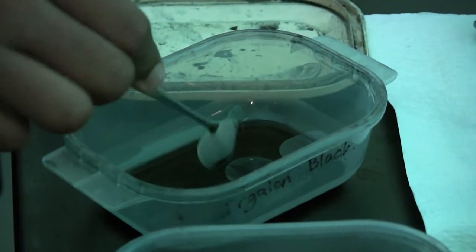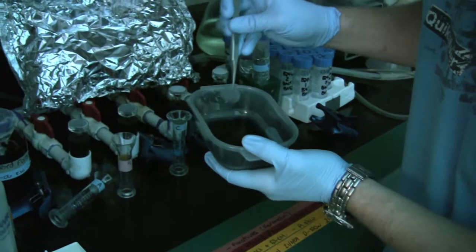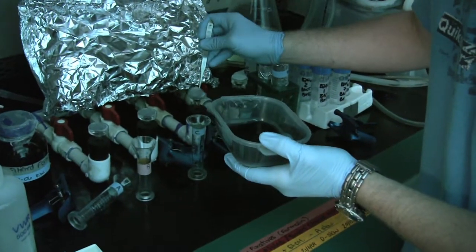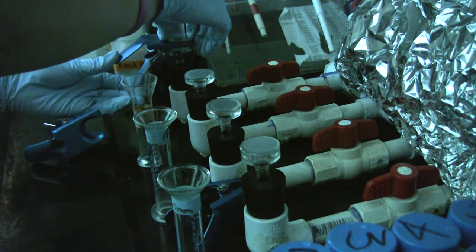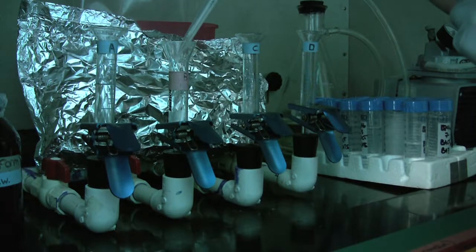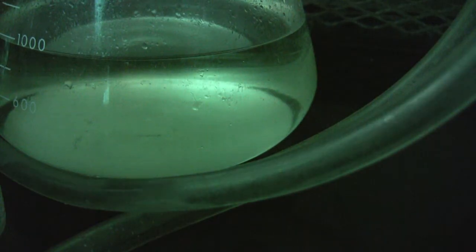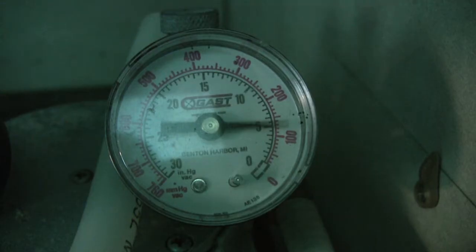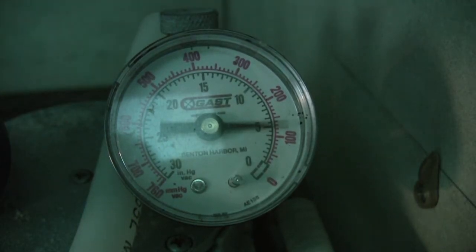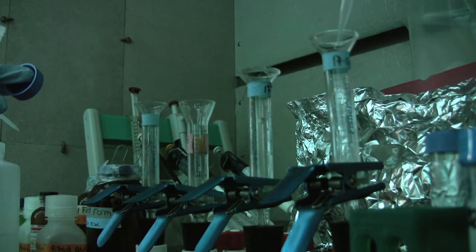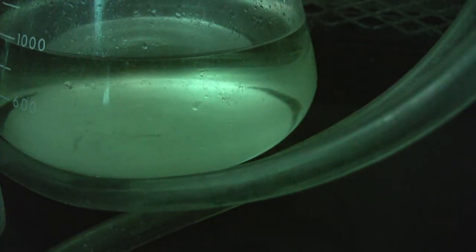First, we inverted the test tubes to mix the bacteria, then we dyed the filters so the DNA would show up. We put three milliliters of water into test tubes and suctioned it out so that just the bacteria was left. Then we added DAPI and drained that out too, so all the bacteria turned blue.